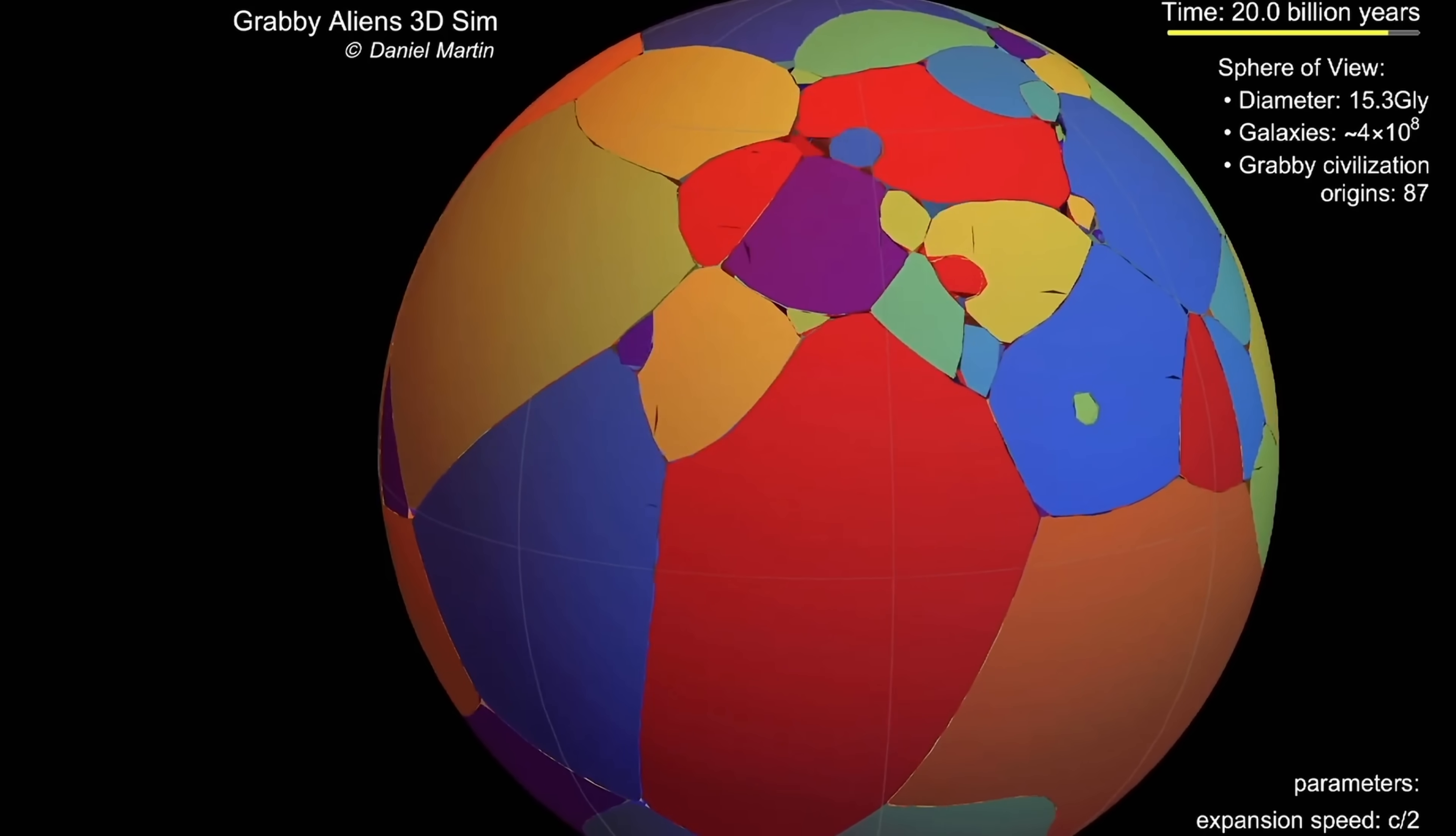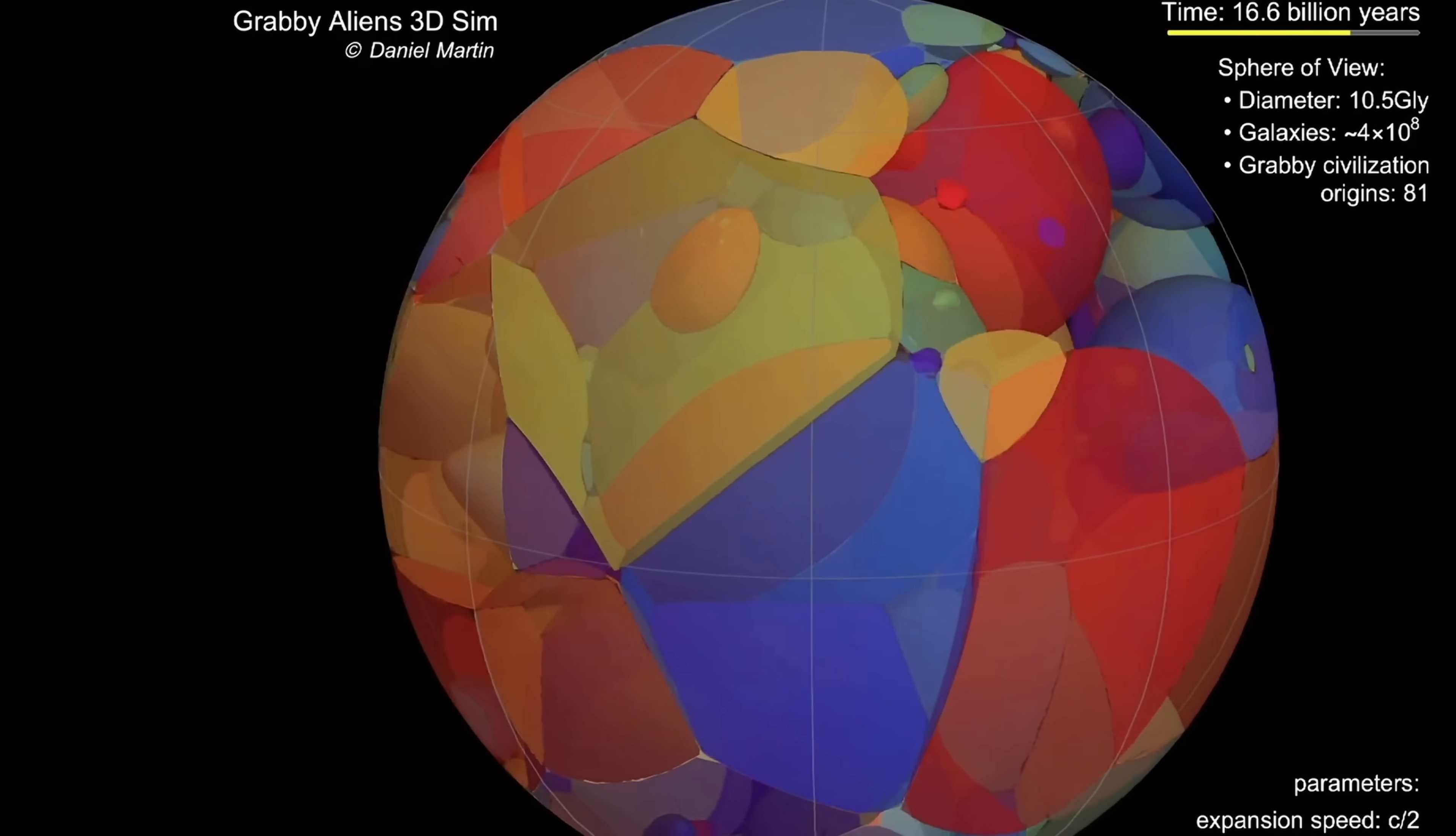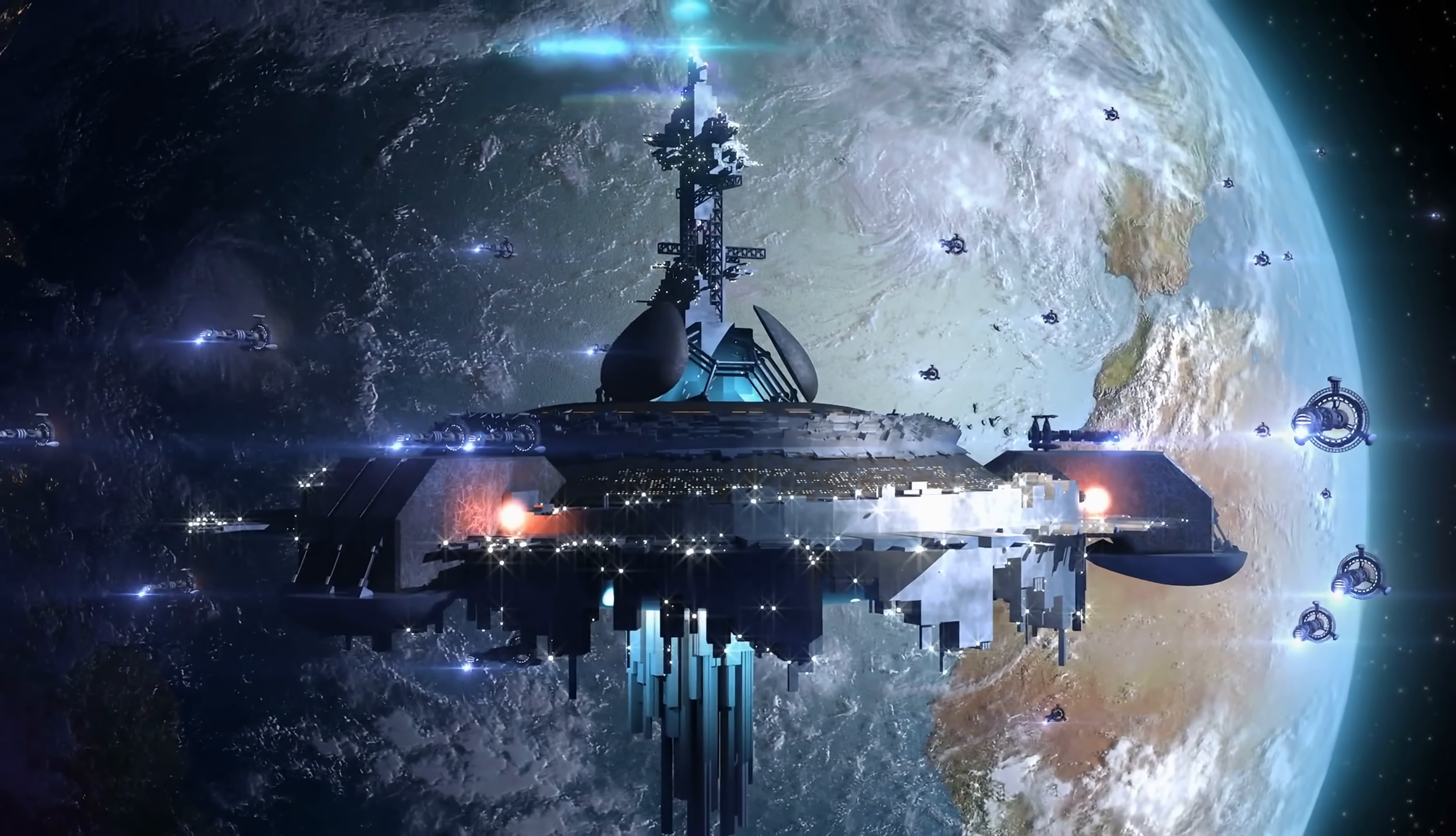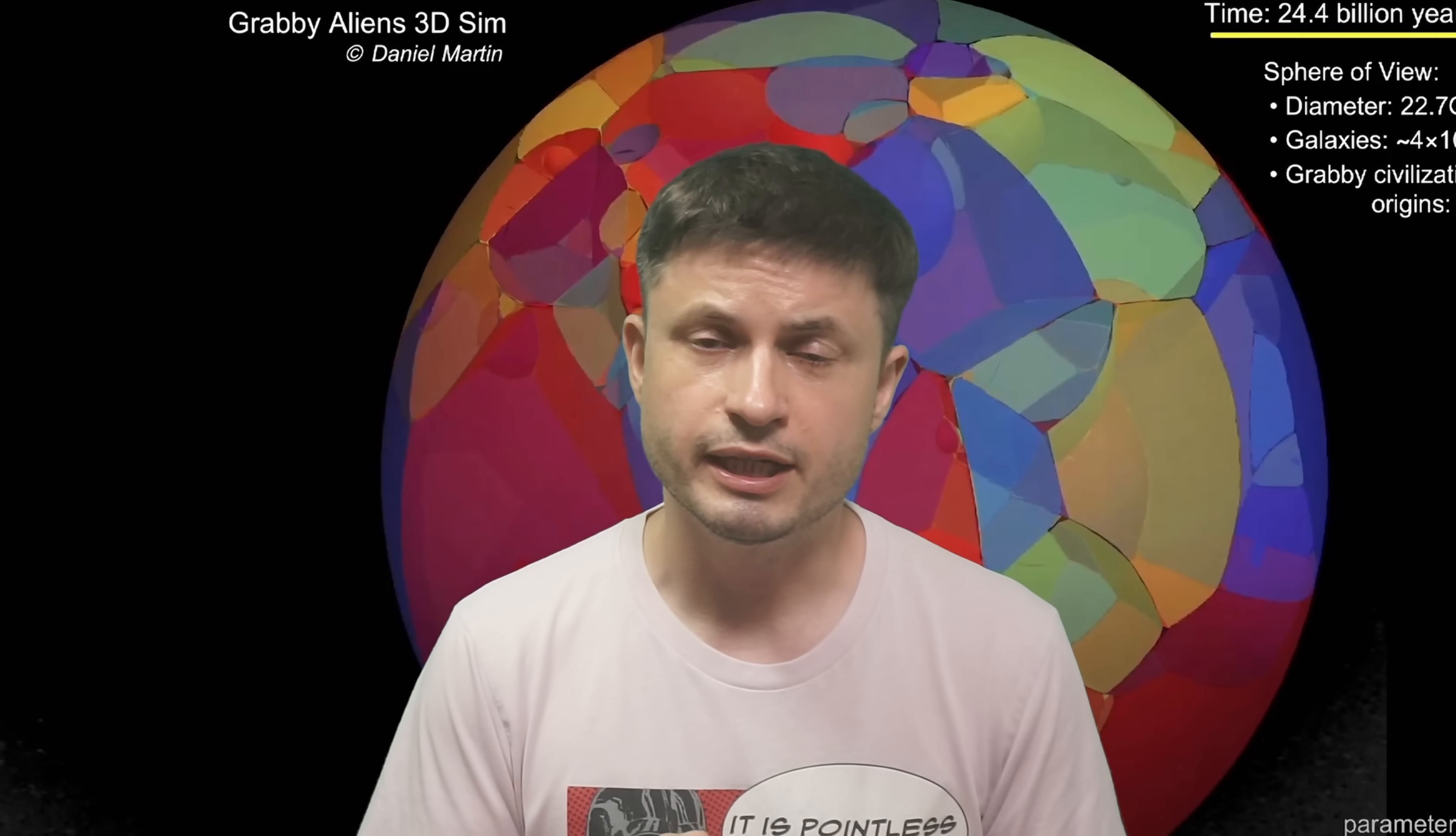And you'll notice that in approximately 10 billion years from now, pretty much everything becomes more or less occupied by someone somewhere out there. And at that point, no new space is available. And the entire visible sphere right here, with a diameter of about 22 billion light years, is essentially occupied by just 87 grabby civilizations. And all of this obviously looks like some kind of a space video game, like Stellaris or something, where a lot of different civilizations fight for space. But the main point here is that this is what they got from the simulations and from the calculations based on those previous assumptions I explained in the beginning.